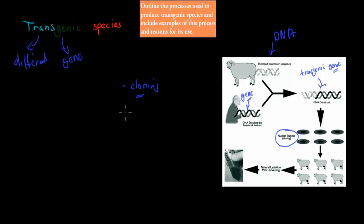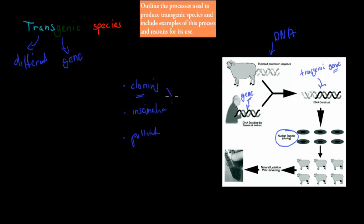We also had artificial insemination and artificial pollination. All of these are examples where we have the gene from the same species. But now we're talking about a transgenic species — a species that has genes from two different species.